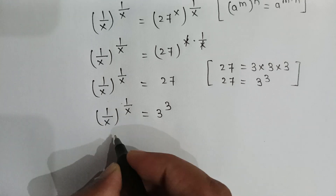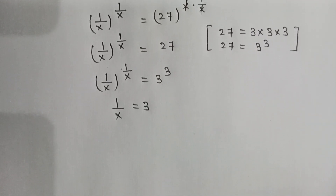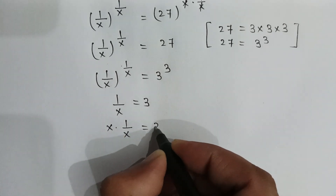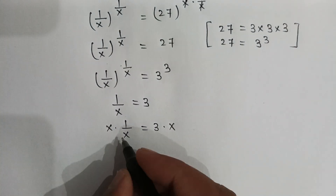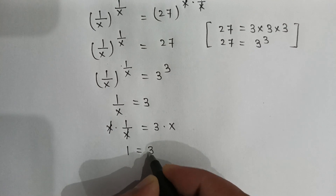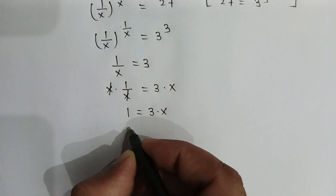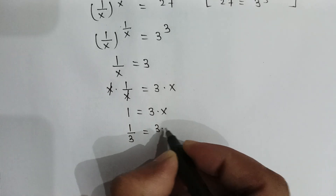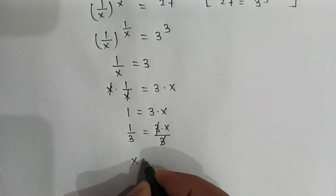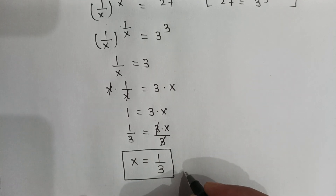We can see clearly that 1 divided by x is equal to 3. If we multiply x on both sides, x multiplied by 1 divided by x is equal to 3 multiplied by x. If we divide both sides by 3, then 1 divided by 3 is equal to 3 multiplied by x divided by 3. The 3s cancel out, so x is equal to 1 divided by 3. The value of x is 1 divided by 3.